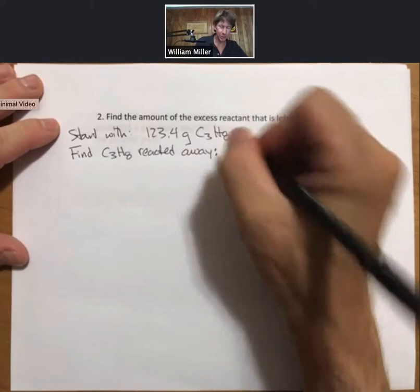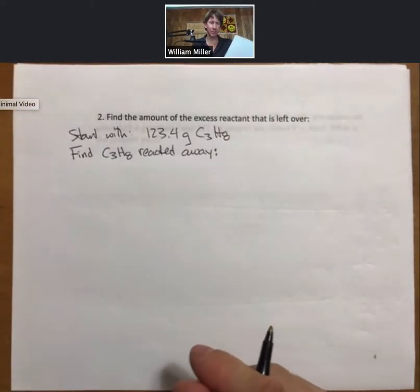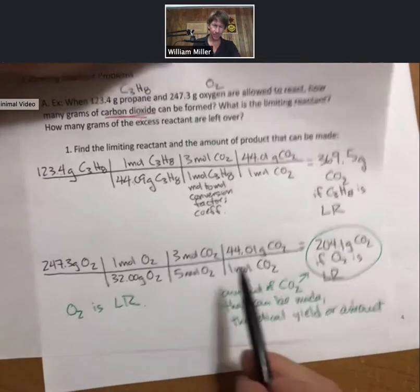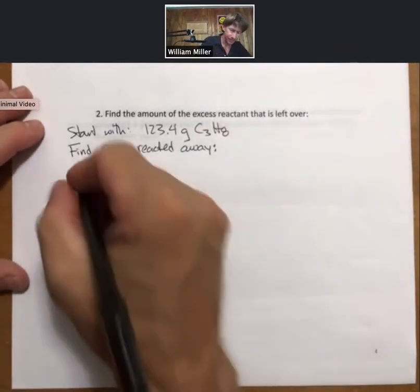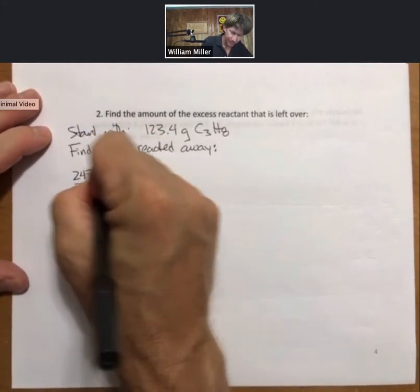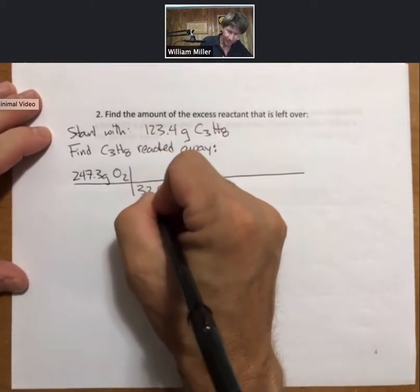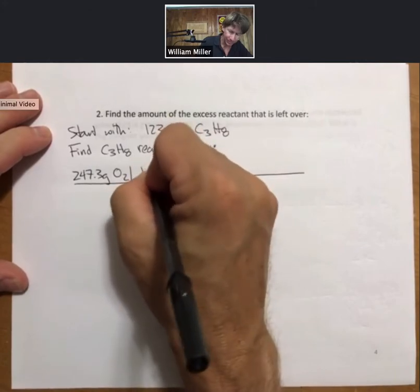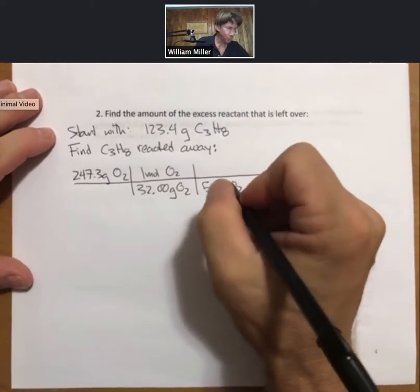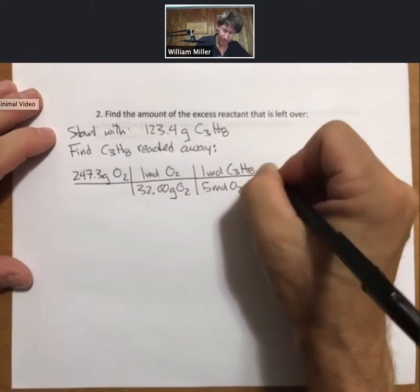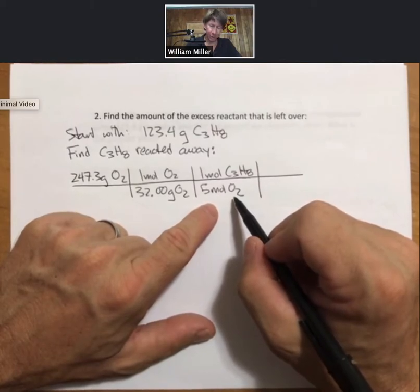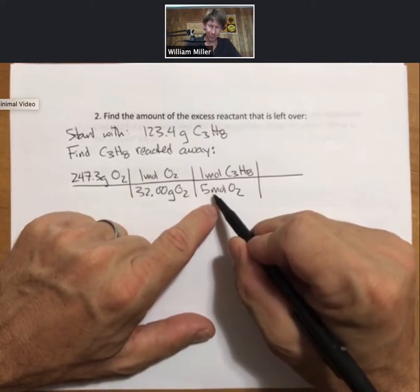The technique we're going to use for that is we're going to come back to our 247.3 grams of oxygen, which we know reacted. We're going to do stoichiometry this time to propane. And here's what that looks like. So 247.3 starts off the same. Then for every five moles of oxygen, one mole of propane.